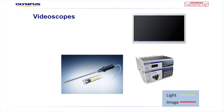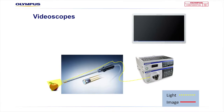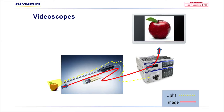We plug our video scope into the compatible processor and light source and power up, ready to view our subject. When the objective lens views the subject, the photons are reflected from the lens onto the chip surface. The image seen by the lens is then turned into a digital signal right there at the chip. This signal is then sent via electronic wires back through the scope all the way back to the processor for processing.